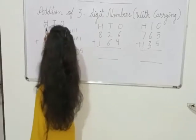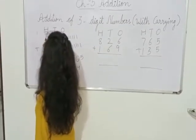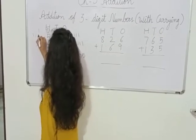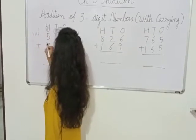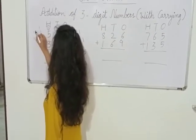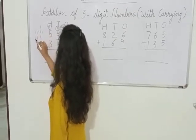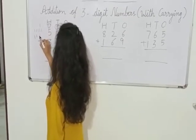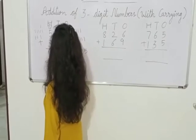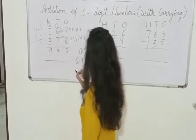Now for the 100's place: here is 1 carried, we draw 1 line. Here is 5, we draw 5 lines: 1, 2, 3, 4, 5. Here is 3, we draw 3 lines. Now let's count: 1, 2, 3, 4, 5, 6, 7, 8, 9. So what is our answer? Our answer is 945.